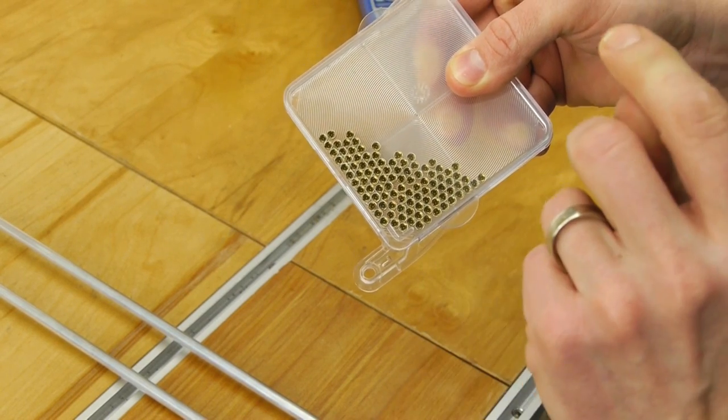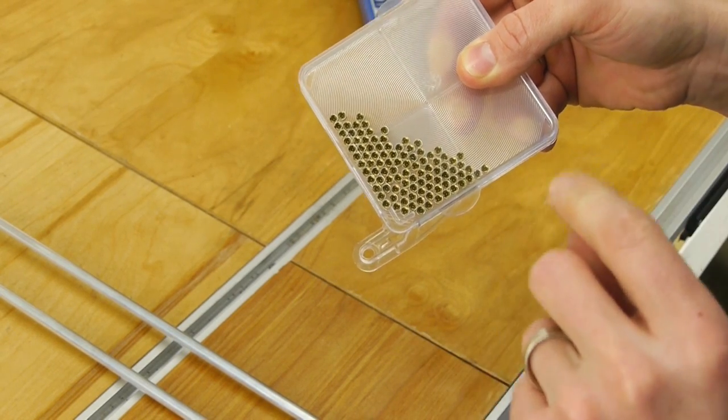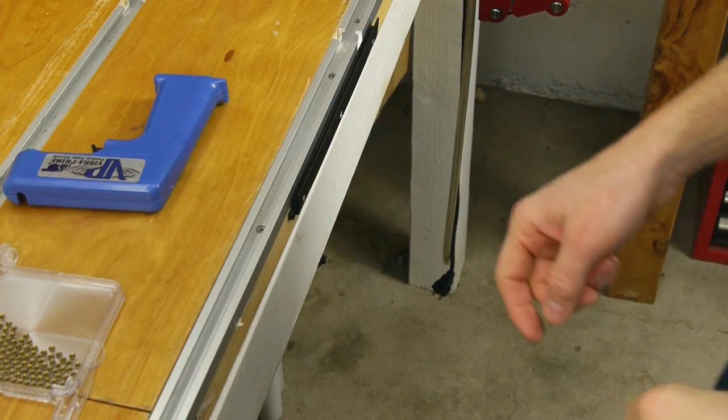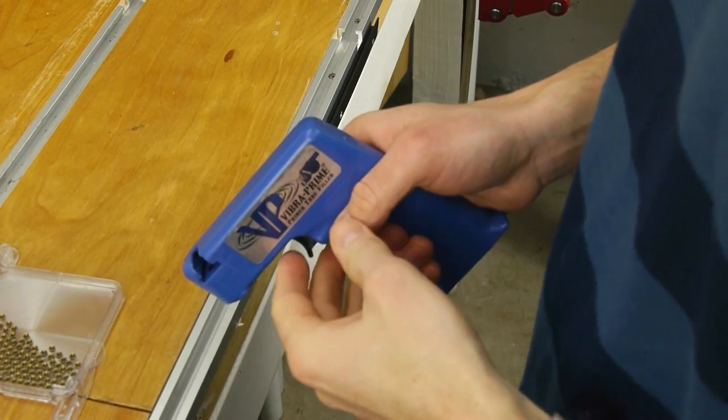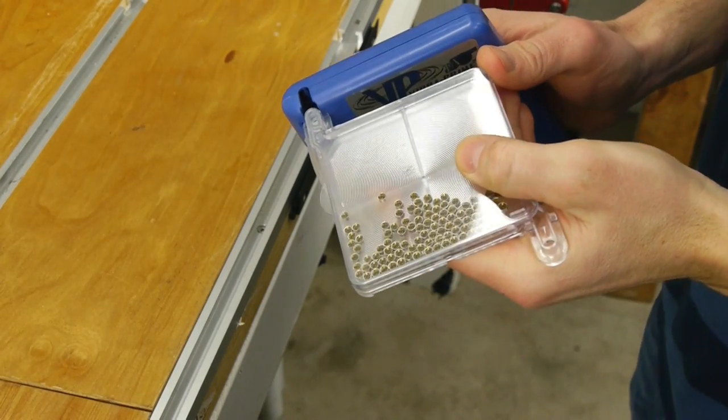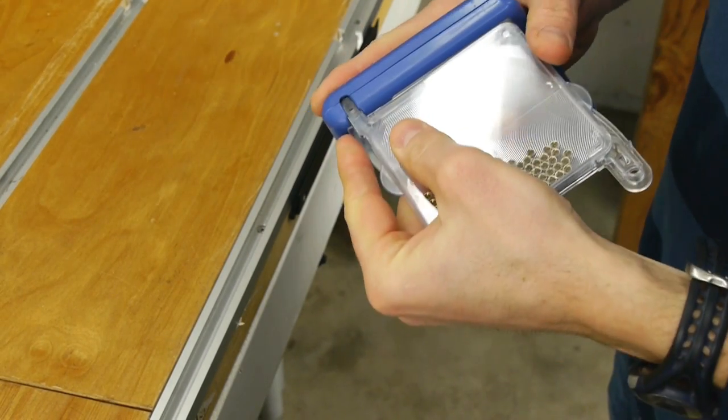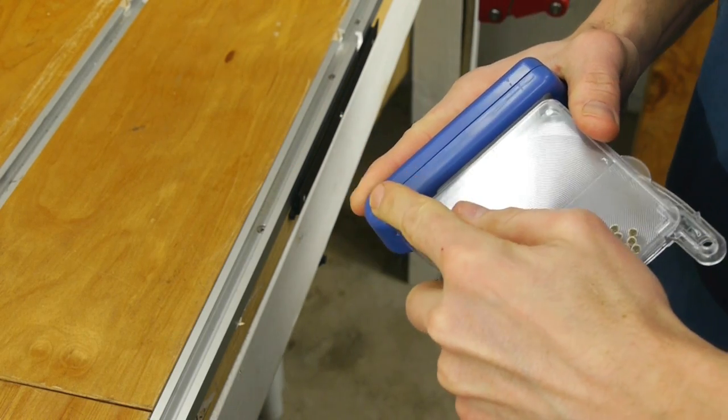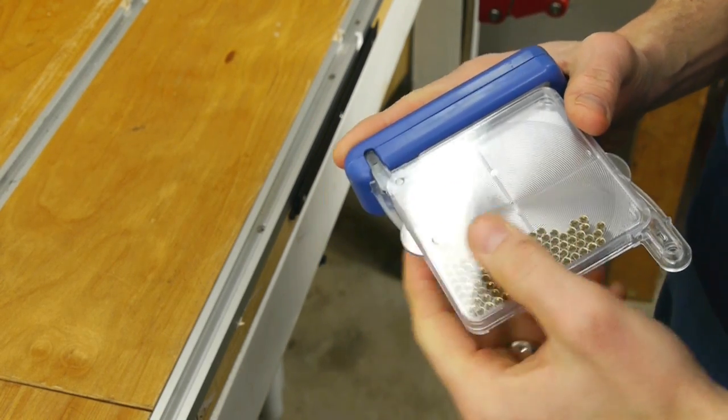Next we're going to attach this to the Vibra Prime pistol grip and load some primers. We're going to begin by picking up the pistol grip and then take the primer tray and insert the small primer tab with the drop port into the unit.